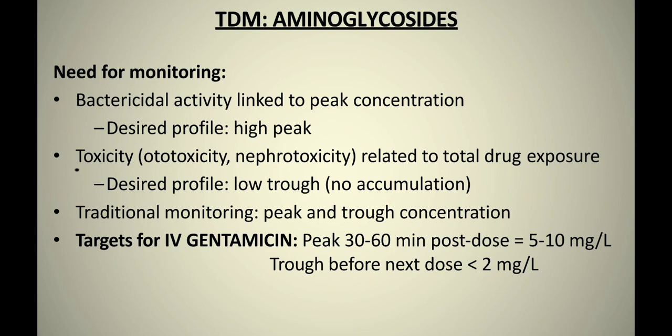The desired profile requires looking at a low trough. For traditional monitoring, you measure both peak and trough concentrations. You should check the concentration of that drug in the plasma, and it should be less than 2 mg per liter before you can give another dose.